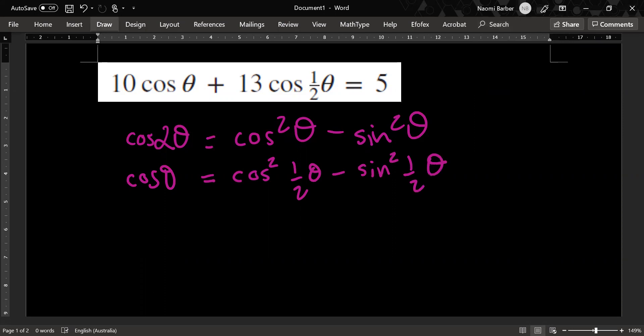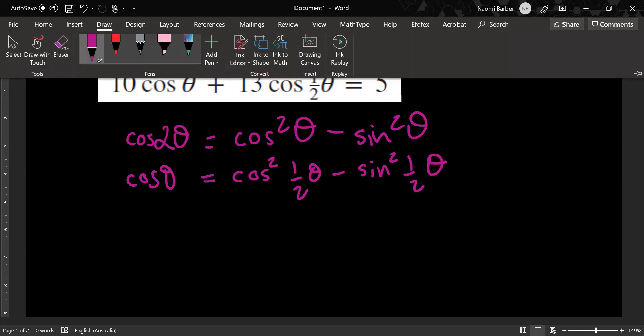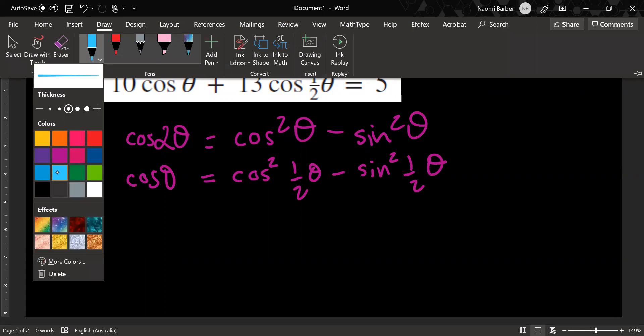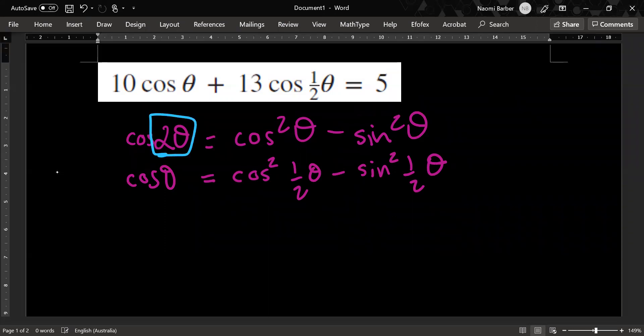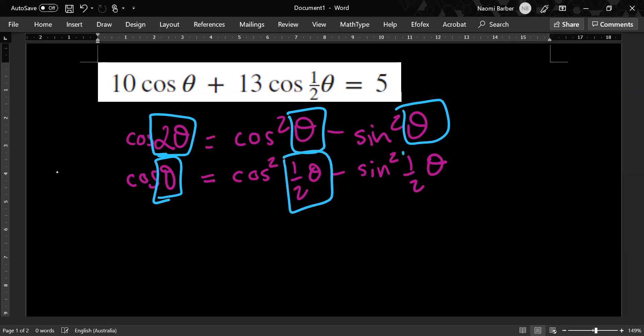Now using the identity that we have cos 2 theta equals cos squared theta minus sine squared theta, it would follow that cos theta equals cos squared half theta minus sin squared half theta. Because whatever you have here, I've got two thetas here, I have one theta here and I have one theta here or half of it. I have a whole theta here and I have half of it here and half of it here.